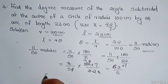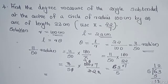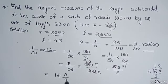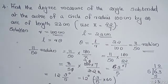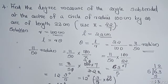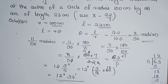63/5 degrees: dividing 63 by 5 gives 12 remainder 3, so we have 12 and 3/5 degrees. We convert 3/5 of a degree into minutes by multiplying by 60, which gives 36 minutes. Therefore the answer is 12 degrees 36 minutes.